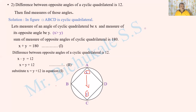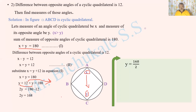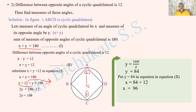Substitute x equals y plus 12 in equation number 1: y plus 12 plus y equals 180, so 2y plus 12 equals 180, then 2y equals 168, therefore y equals 84 degrees. From equation 2: x equals y plus 12 equals 84 plus 12, so x equals 96 degrees. Therefore the measures of the angles are 96 degrees and 84 degrees.